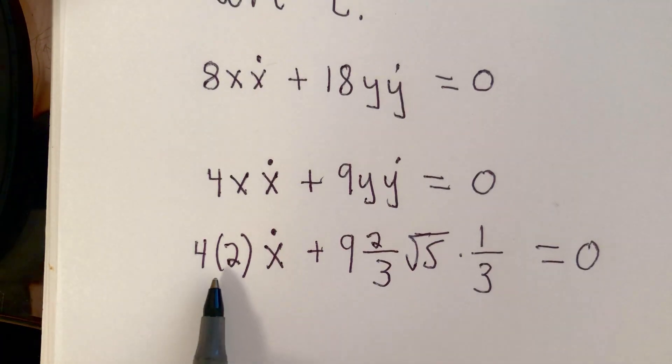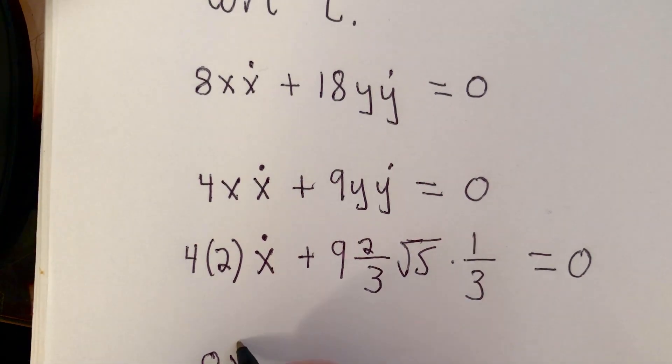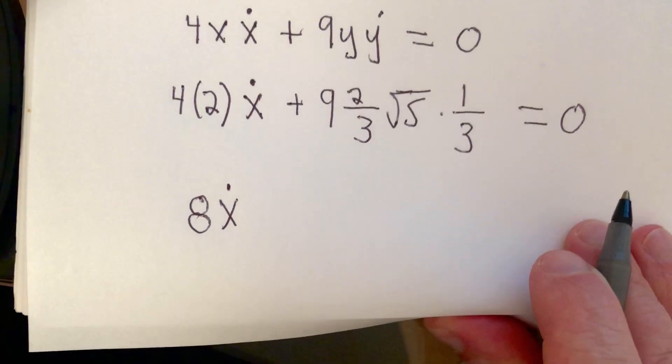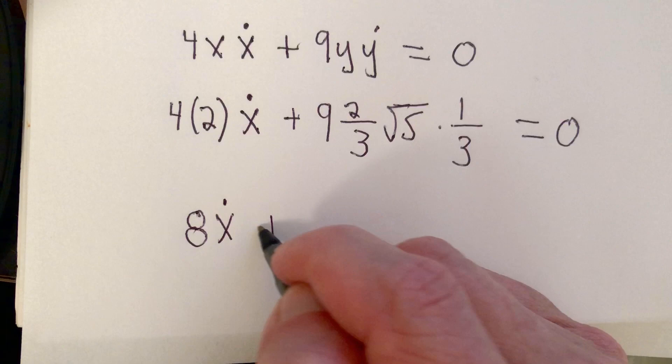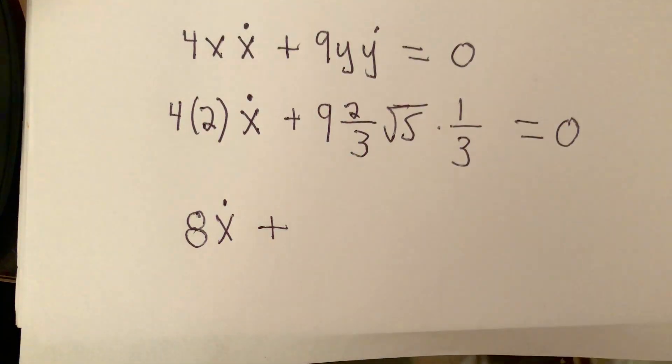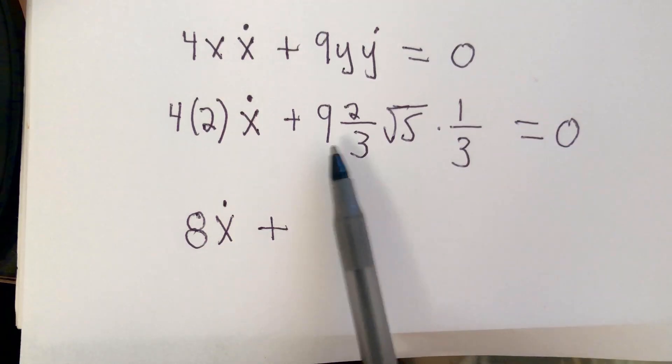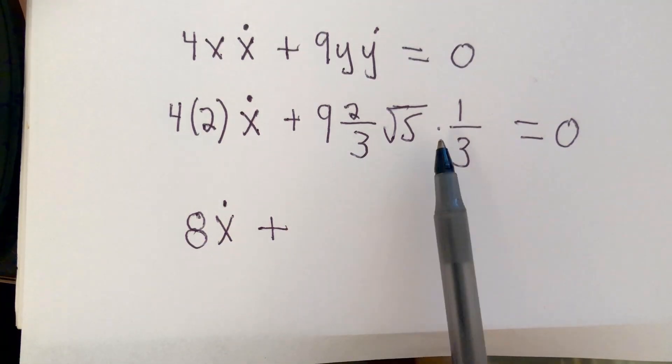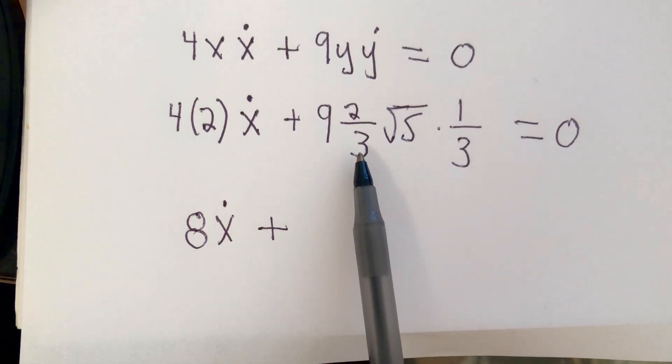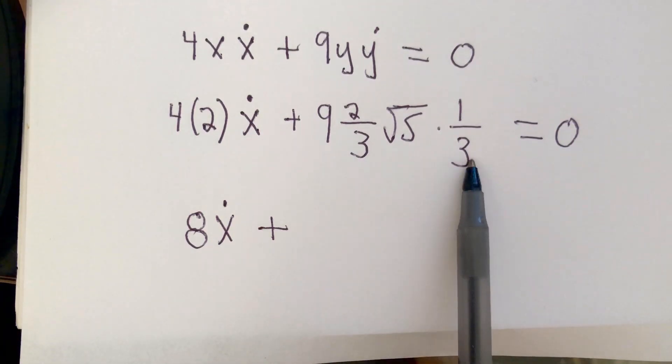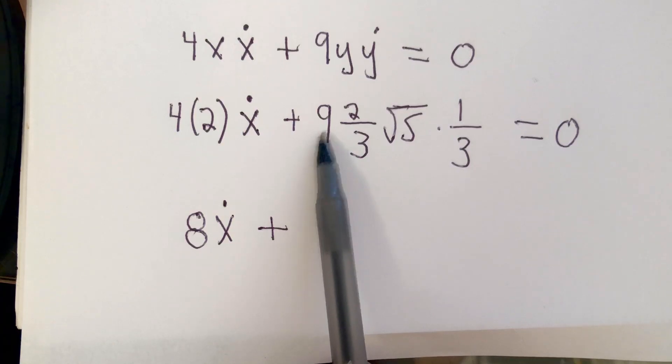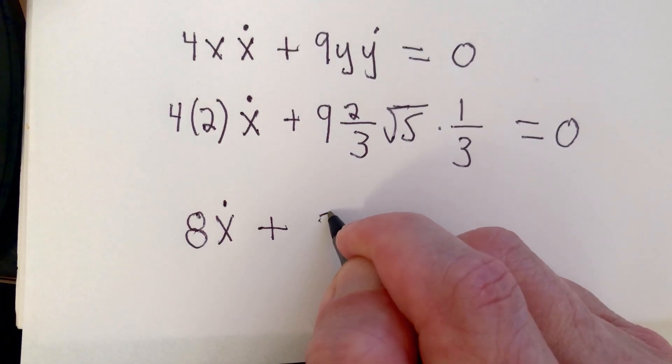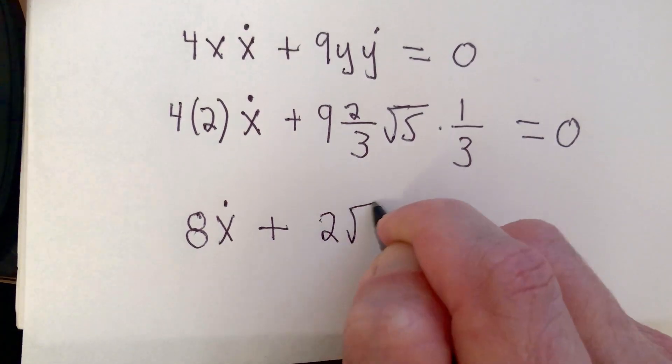So here's where we are right now. We have 4 times 2 times x dot, so what we have is 8 times x dot plus, well, we have 9 times 2 thirds times the square root of 5 times 1 third. So look what's happening here. I have in the denominator 3 times 3, which is 9, which is going to cancel with that 9. So I'm skipping a little bit of algebra here. We're going to have 2 times the square root of 5.